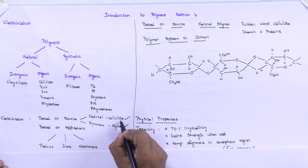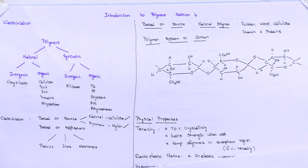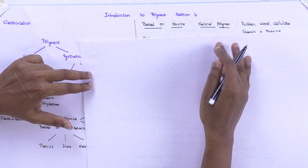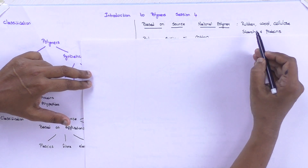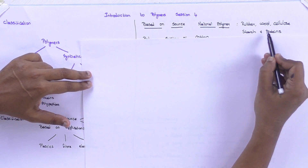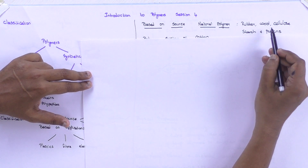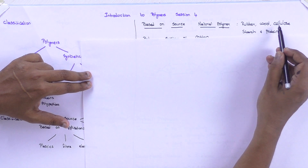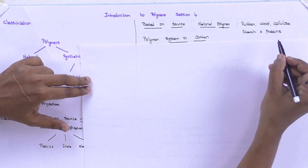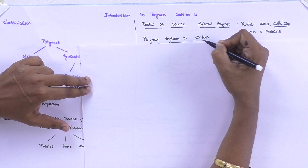Cellulose is an example of a natural polymer and nylon is an example of a synthetic polymer. The available natural polymers include rubber, wool, cellulose, starch, and protein. We are now going to study the polymer system based on cellulose, which is cotton.